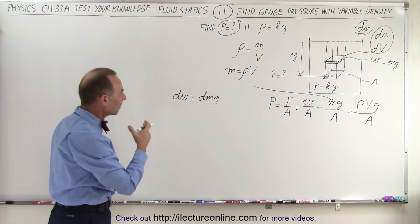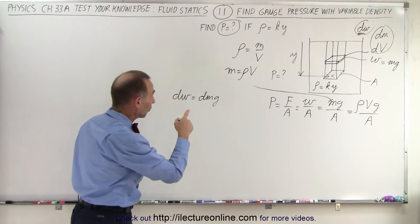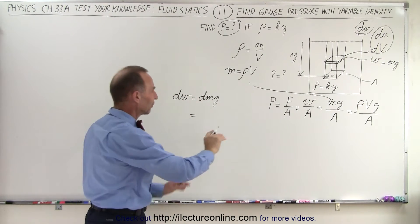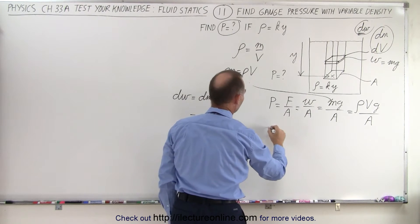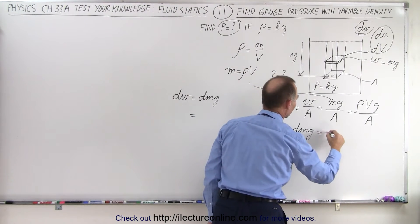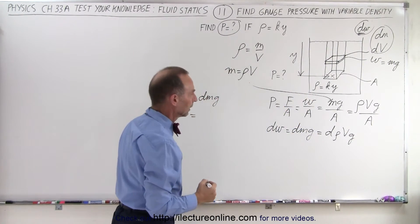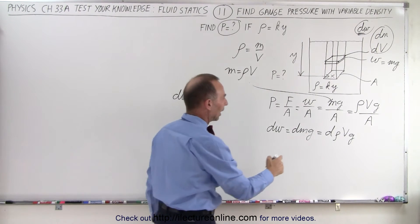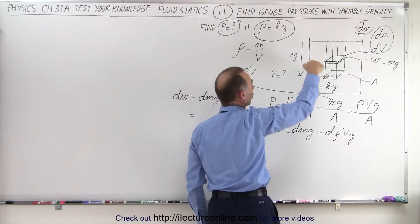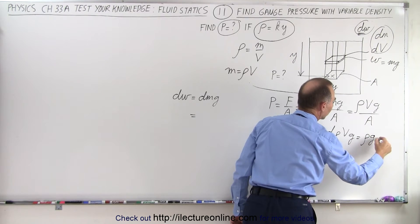We can say dw equals dm times g. That makes sense because w equals m times g, so dw equals dm times g. The mass changes as the density changes, so we replace dm with d(ρV). This gives dw equal to d(ρV)·g, which we can write as ρ times g times dV, where density is a function of position below the surface.